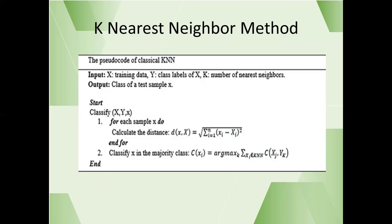The core principle of k-nearest neighbor algorithms: we take all the training data set and find out the k closest neighbors to the sample. Then we perform the majority voting on the k-nearest neighbors, and based on the majority class, we determine the new class.